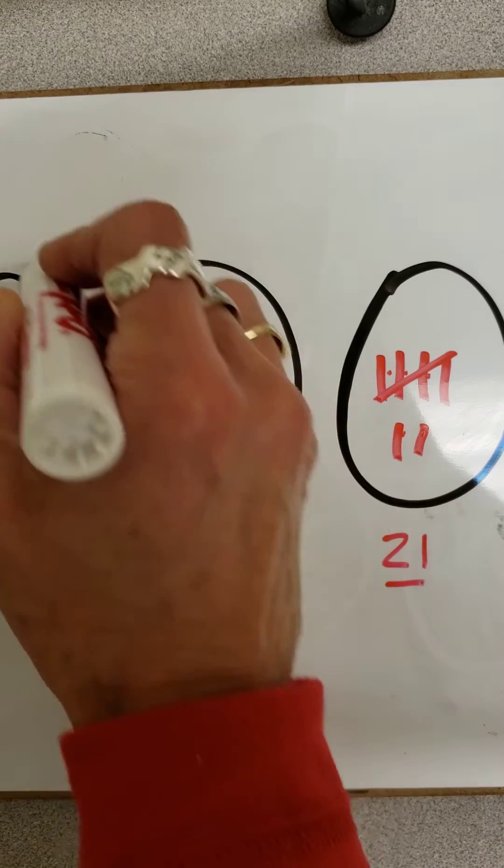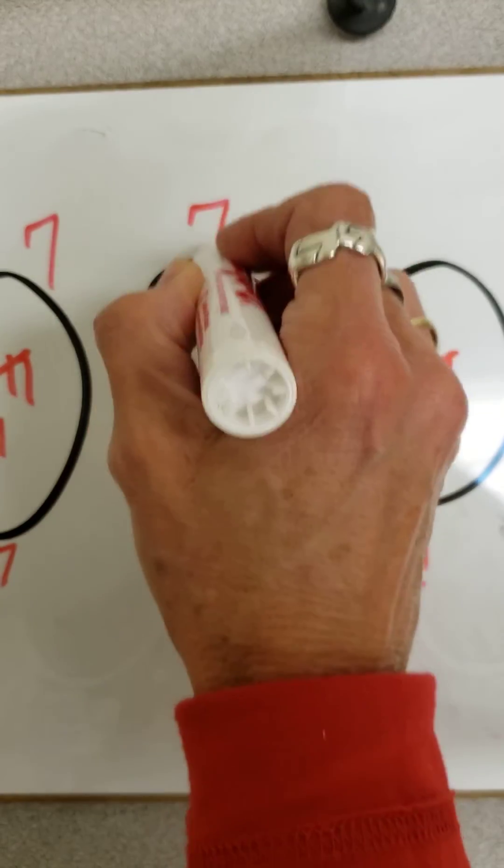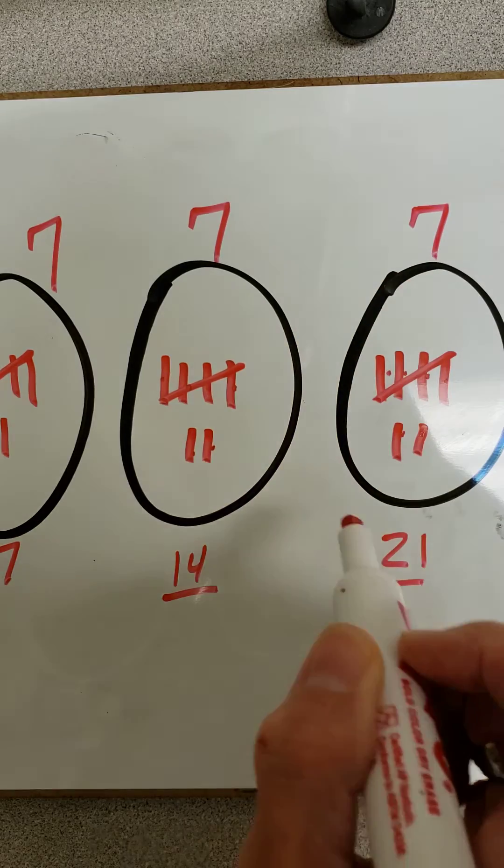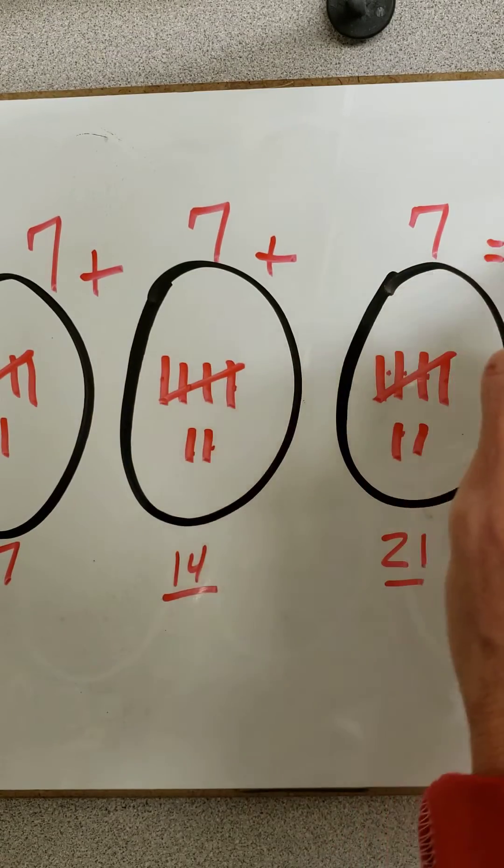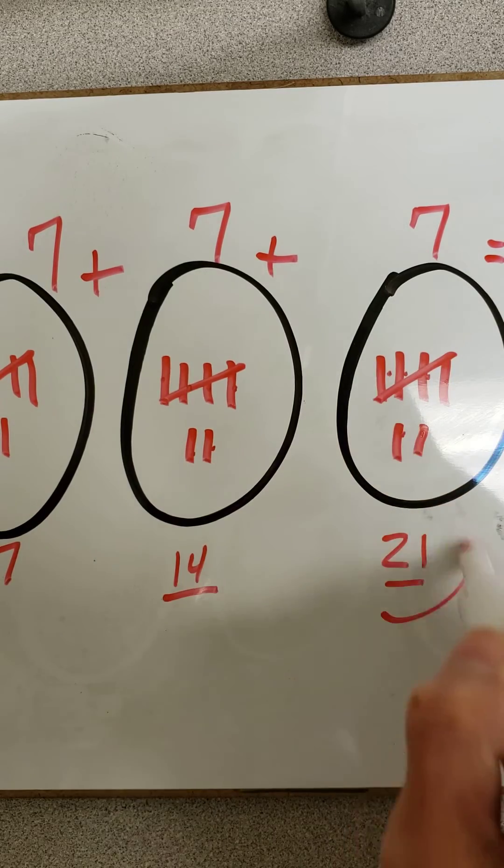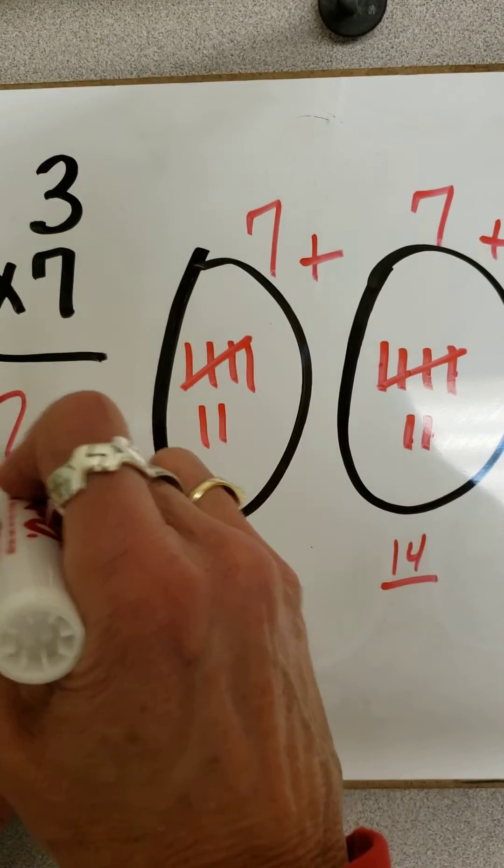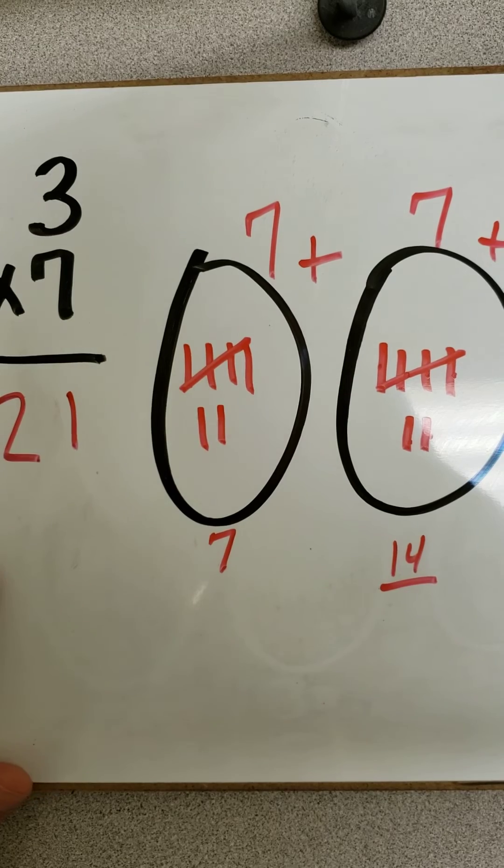Now I know that there's groups of 7 in here and each one of them there's groups of 7. So it's kind of like adding 7 plus 7 plus 7. And then I know that my total is 21. Did you get 21 for yours? I hope so.